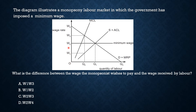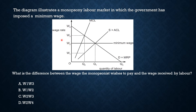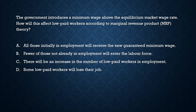Checking the options: Option A — W1 and W3 — is wrong. Option B — W1 and W2 — yes, this is the difference: W1 is what the monopsonist used to pay and W2 is what workers now receive under the minimum wage, so option B is correct. Option C — W3 and W2 — is wrong as that is not the monopsony wage. Option D — W2 and W4 — refers to maximum wage, so option B is the right answer.